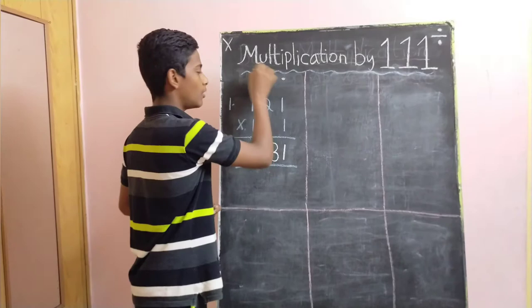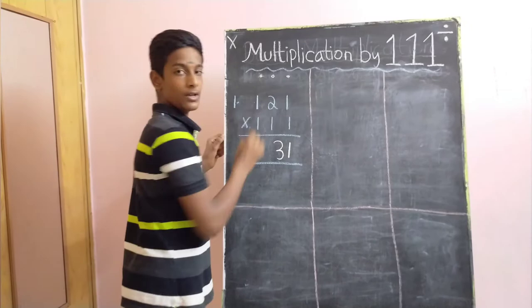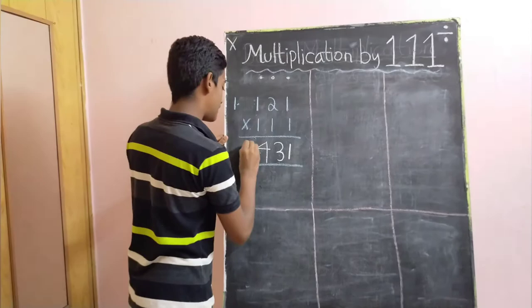So, we have to add 1 plus 2 plus 1 which gives us 4. Now, 2 plus 1 which gives us 3 and 1. So, let's see another example.